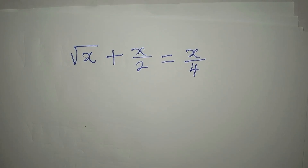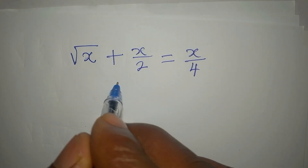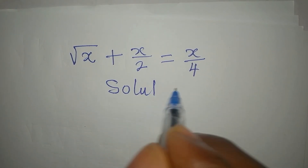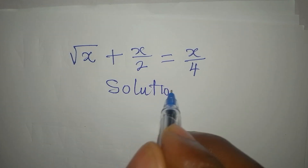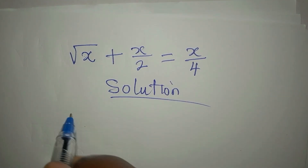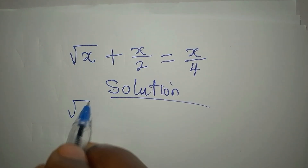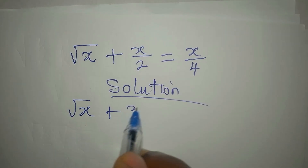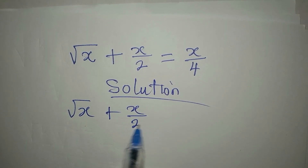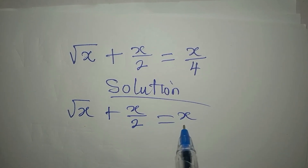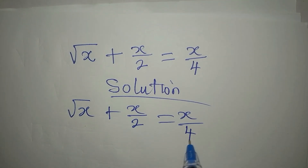Hello everyone, let's deal with this very quickly. We have the equation: square root of x plus x over two equals x over four.